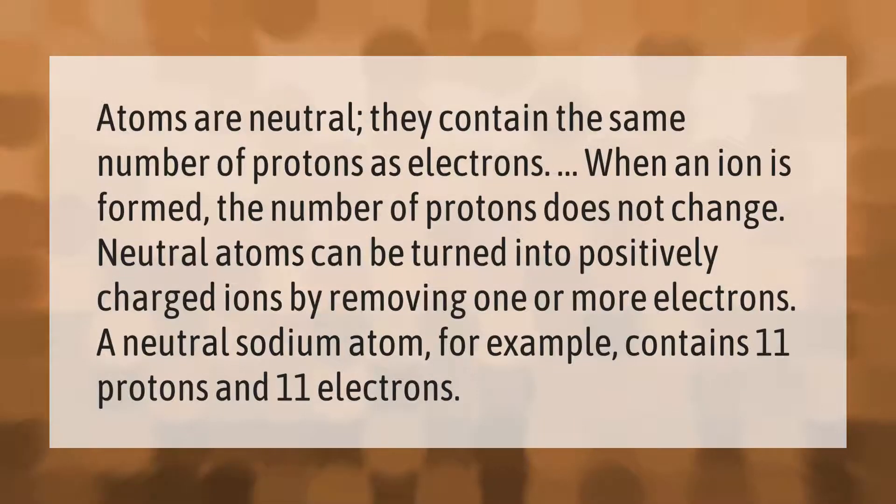Atoms are neutral; they contain the same number of protons as electrons. When an ion is formed, the number of protons does not change. Neutral atoms can be turned into positively charged ions by removing one or more electrons. A neutral sodium atom, for example, contains 11 protons and 11 electrons.